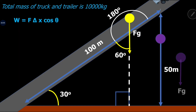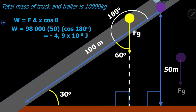Using only the vertical height of 50 meters, the work done equals the force of gravity times 50 meters times cos180°, giving negative 4.9 × 10⁶ joules. Alternatively, EP = mgh × cos180°. Since EP = mgh is actually the work formula, all three methods yield the same result. Those are the three ways to calculate work done by the force of gravity on an inclined plane.